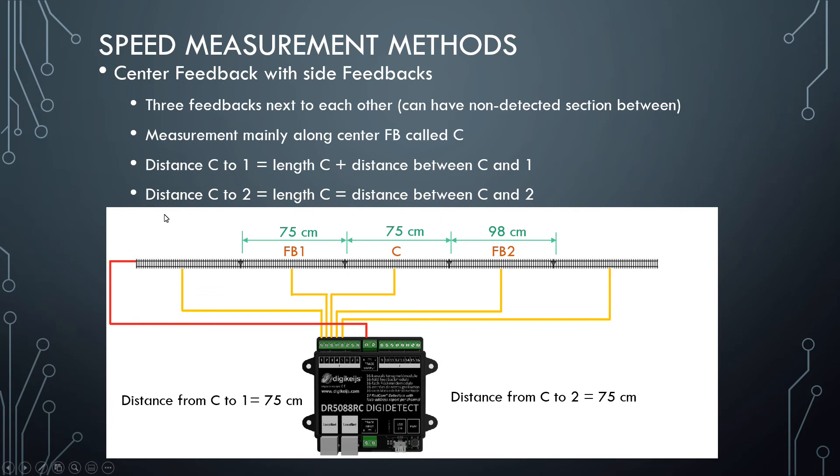When you fill in the measurement called distance from C to one, you're measuring the distance or the length of C plus the distance between C and FB1. In this case, there is no distance, it's zero. So the value here will just be the length of C, which is 75.